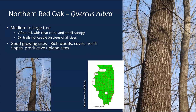Northern red oak is a medium to sometimes very large tree, often with a tall clear trunk and small canopy. It has really noticeable ski trails on all sizes of the tree, and you can really see it in these pictures. This one grows in more productive upland sites — north slopes, coves, rich wood sites, maybe the higher drier ends of bottomlands — any place that's really productive with deep soils and enough soil moisture.